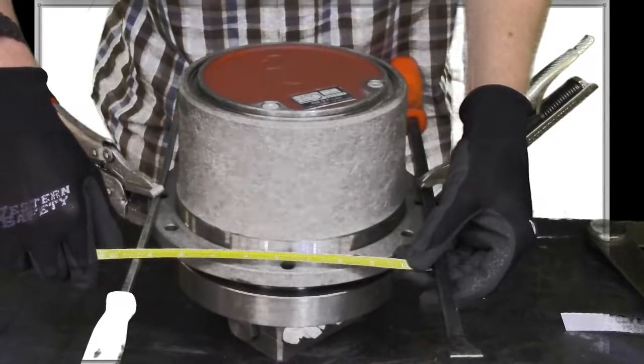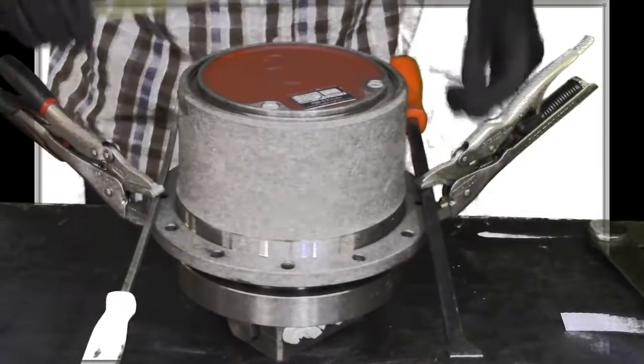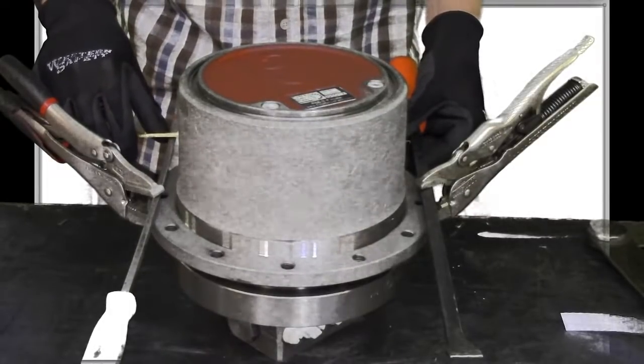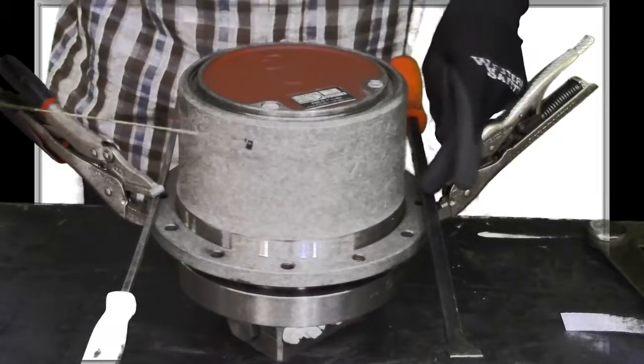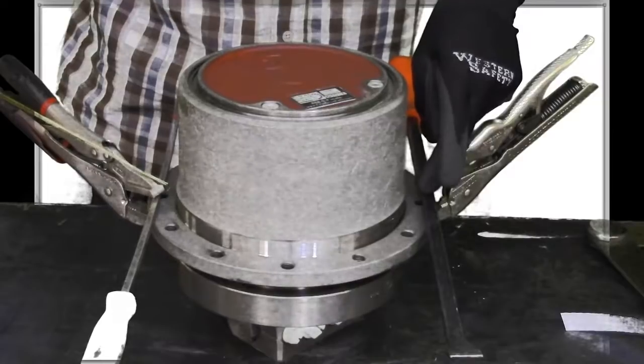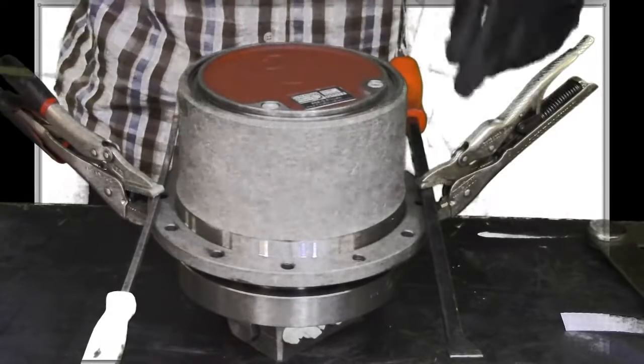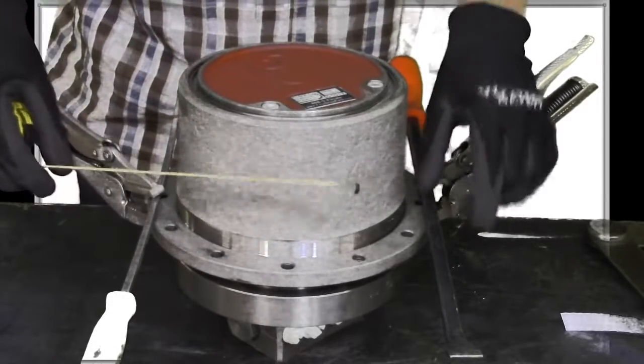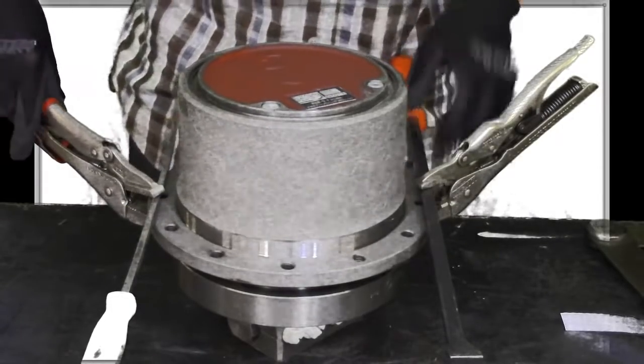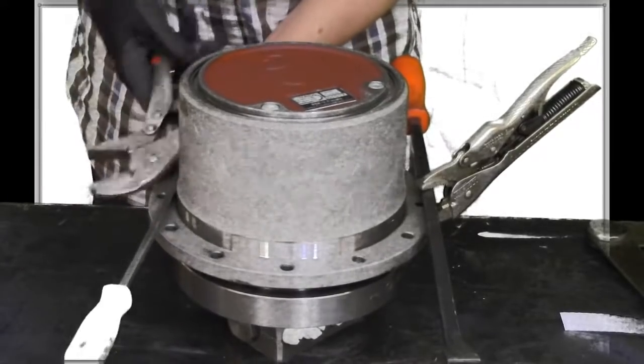And I want to check the same thing on the backside here. And yeah, I've got nine and an eighth. So that tells me that the middle of that bolt hole to the middle of this bolt hole is nine and an eighth inches. You may have one that doesn't have an even number of bolts. If that's the case, you're going to have to kind of estimate it on one side.